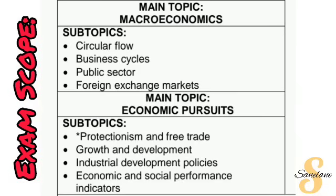When it comes to economic pursuits, we start with protectionism and free trade. A very common question here is arguments for free trade and protectionism, so those are the ones to focus on, together with export promotion and import substitutions. We will cover those in much more detail in the video on possible essay questions. But when it comes to the scope itself for Sections A and B, remember you still have to cover everything. I'm of the belief that if you study well for Section A and Section B, you will not struggle with Section C.